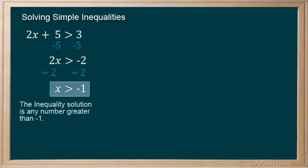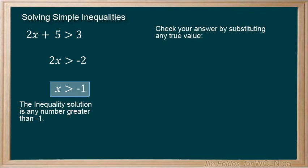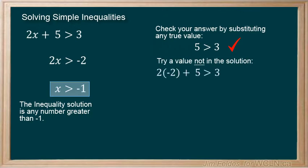Just like you could do for checking your answer for an equation, you can substitute any value from our solution back in the original statement to make sure it's true. For simplicity, we could use 0. 2 times 0 is 0, leaving us with 5 is greater than 3, which of course is true. What if we substituted a value out of the range of our solution? Try negative 2. 2 times negative 2 is negative 4, plus 5 is 1, which is not greater than 3, suggesting that our solution looks to be correct.